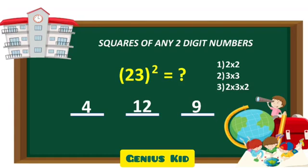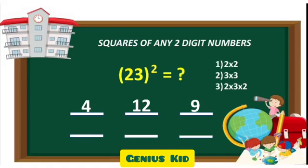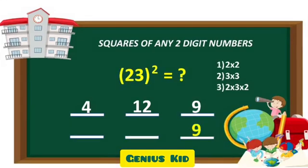Hence, 12 is our middle number. However, this will not be our answer because 12 is a 2-digit number. To get the answer, we have to apply carry over. So, 9 remains the same and 2 which is the second digit in 12 remains behind and 1 is carried over to 4, which is equal to 5. Hence, 529 is our answer.